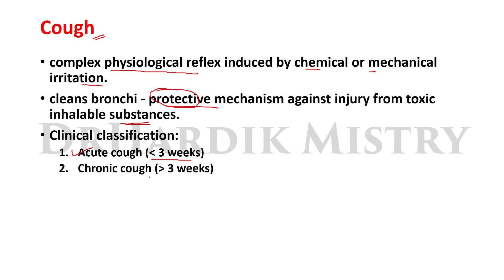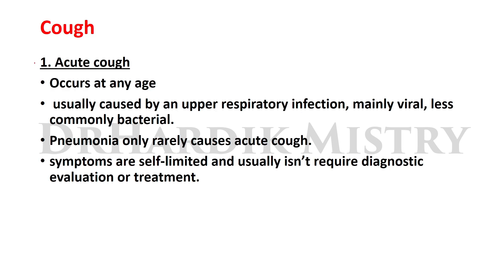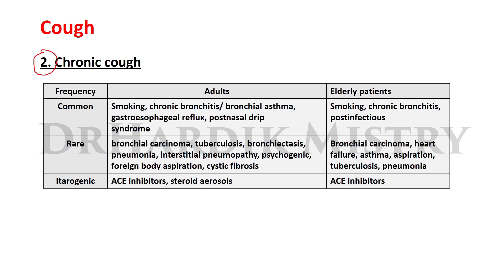Clinical classification of cough: if cough is less than three weeks, it is known as acute cough, and if the cough persists more than three weeks, it is known as chronic cough. Acute cough occurs at any age and is usually caused by an upper respiratory tract infection, mainly viral or less commonly bacterial. Symptoms are self-limited and usually do not require diagnostic evaluation or treatment.